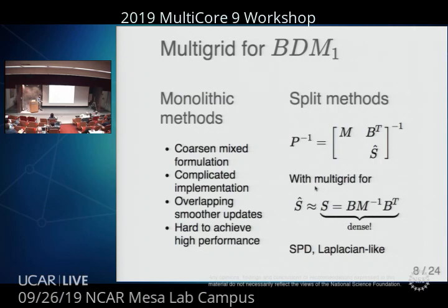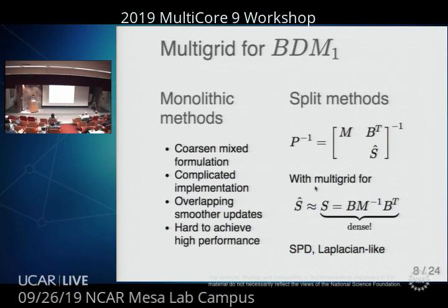There are monolithic methods where you coarsen in this mixed formulation — they're pretty complicated. It involves some sort of overlapping smoother updates or similar decomposition, so it's not so well suited to vectorization and it's hard to achieve high performance. You can achieve pretty low iteration counts. Theoretically, for mathematicians, these are pretty nice methods, but when you actually run them and want to get the fastest method to your target accuracy, usually they're not as attractive.